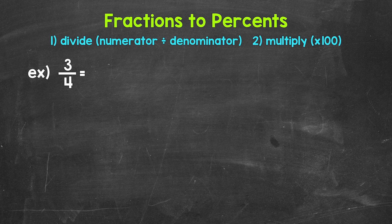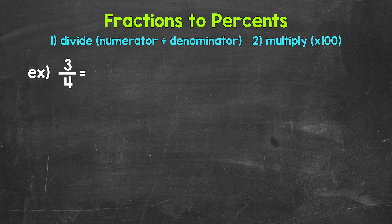Now when we convert a fraction to a percent, we can start by dividing the numerator, the top number of the fraction, by the denominator, the bottom number of the fraction. This will give us a decimal.